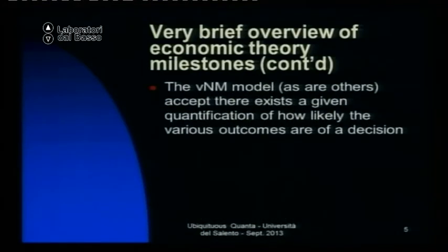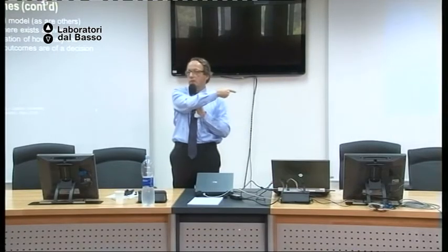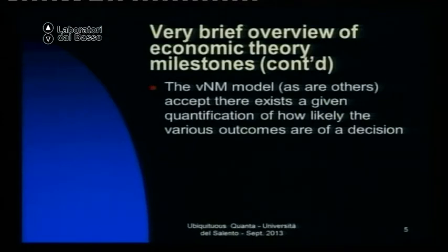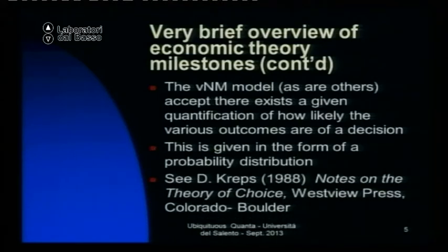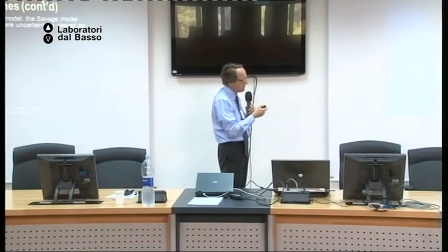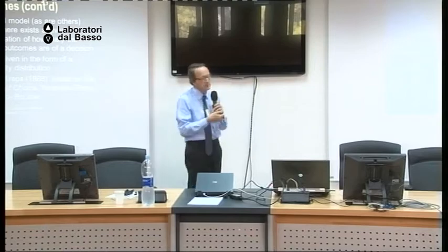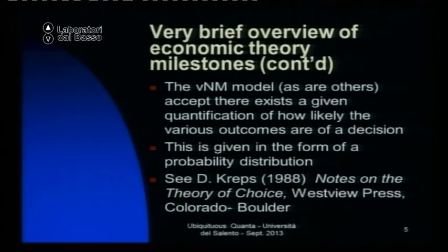The Ellsberg paradox shows violations of some of the axioms — the sure-thing principle — in the Savage model. The Savage model deals with subjective probabilities, so the underlying probability used for the formulation of expected utility here is a subjective probability. There is a very nice little book by David Kreps, 'Notes on the Theory of Choice,' which describes those models very well.